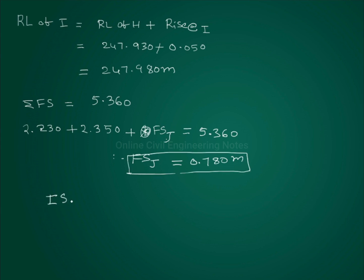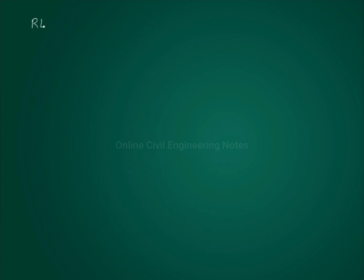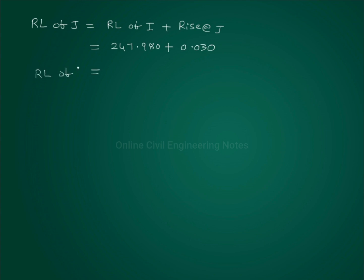Intermediate sight at I minus fore sight at J gives the fall at J. Intermediate sight at I is 0.810 minus fore sight at J of 0.780, giving fall at J equal to 0.030. So RL of J is equal to 247.980 plus 0.030, which equals 248.010 meters.